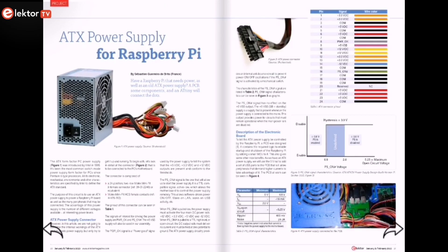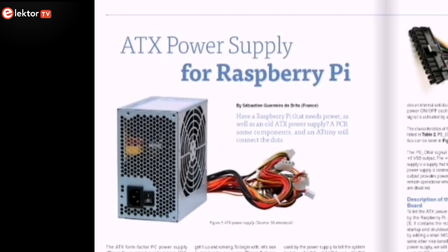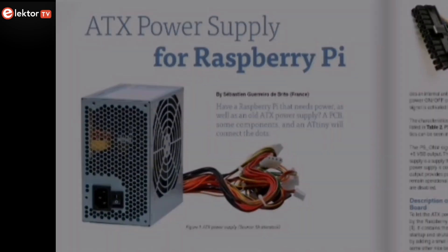Have a Raspberry Pi that needs power, as well as an old ATX power supply? All you need is a PCB, sub-components and an AT-tiny. You'll learn how to do it with this article.